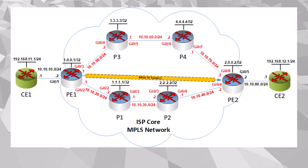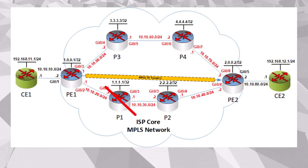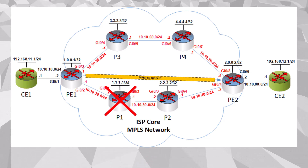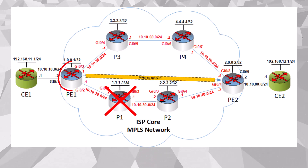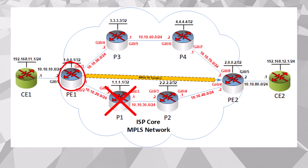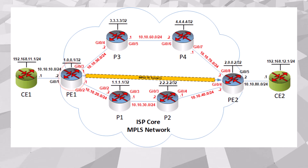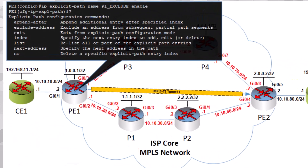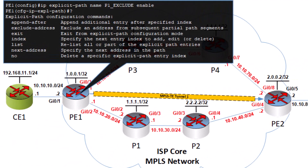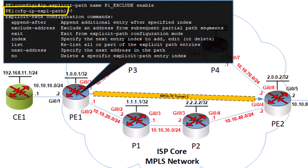Let's start by attempting to exclude the P1 router from our tunnel path. To do this, we configure the following on our PE1 router, which is our headend router. Remember, all of these configurations are applied to the headend router only. Now we must create a construct that is called an explicit path, and we'll name it and then enable it. Let's name it P1_exclude. Once we issue this command, we enter into the explicit path configuration mode.